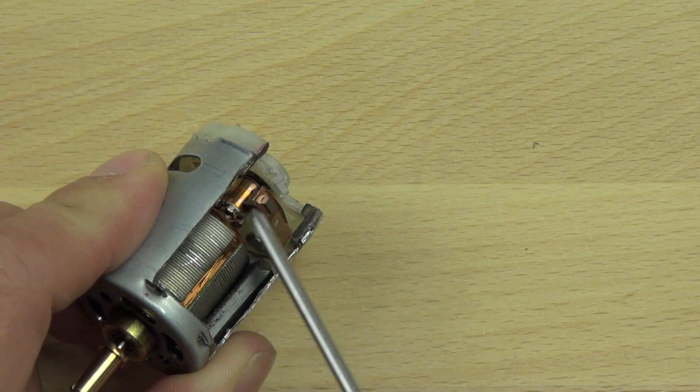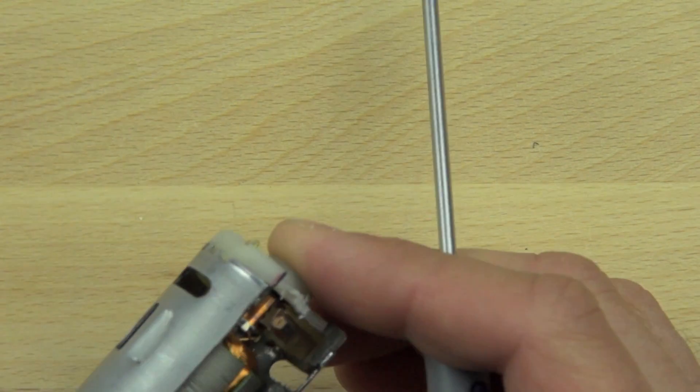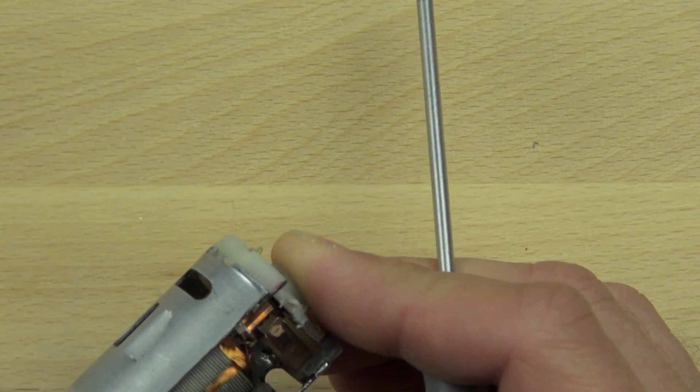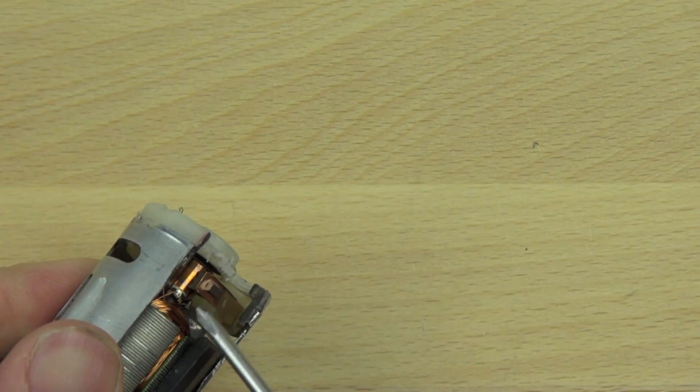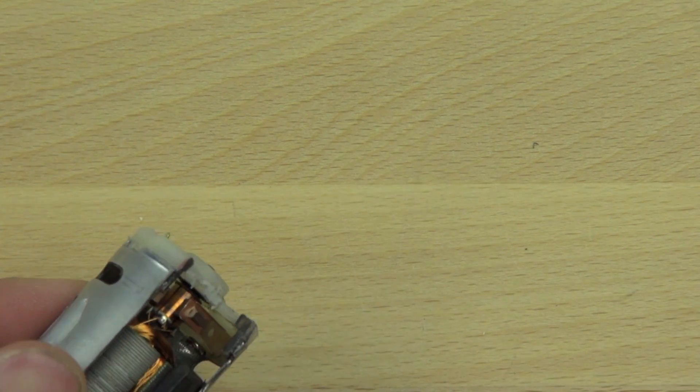And the brush conducts electricity down to this copper drum, which is segmented. It has five segments in this motor and that drum is called a commutator. And so it commutes the electricity to the armature.